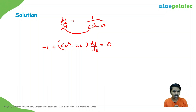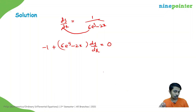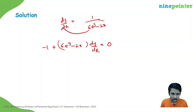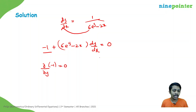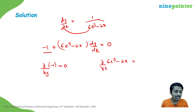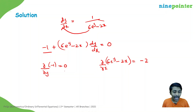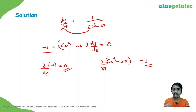This is not variable separable, so we try the exact equation method. To check exactness, we compute ∂M/∂y and ∂N/∂x. The partial derivative of M = −1 with respect to y is 0. The partial derivative of N = 6e^(y−2x) with respect to x gives −12e^(y−2x). Since these are not equal, this is not an exact differential equation.